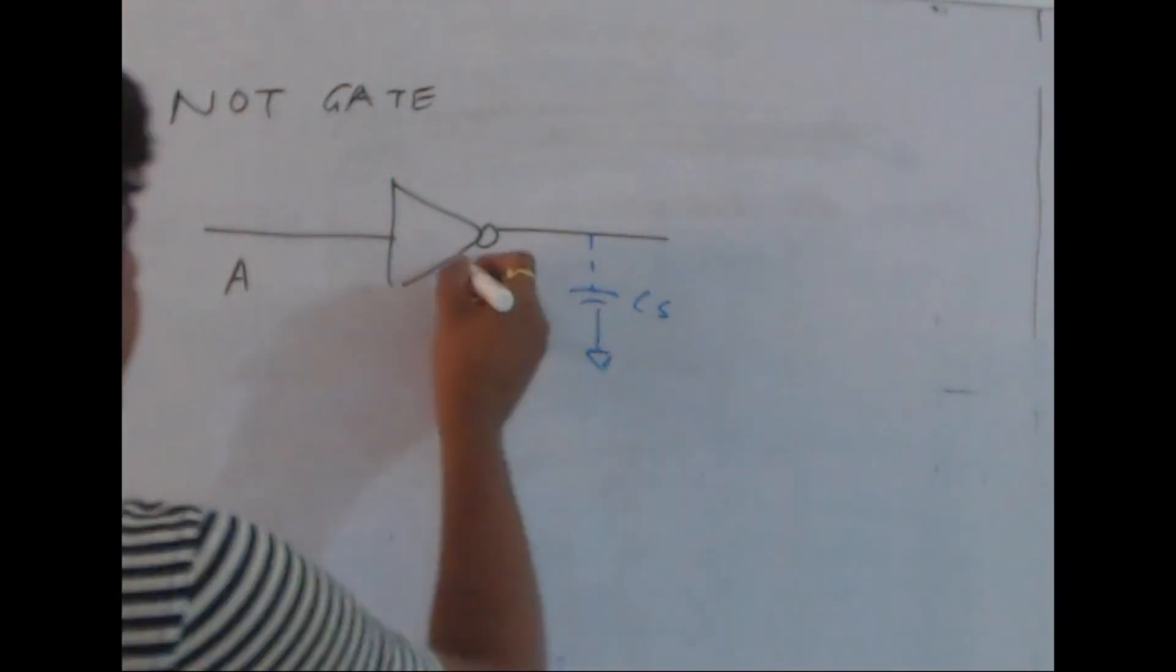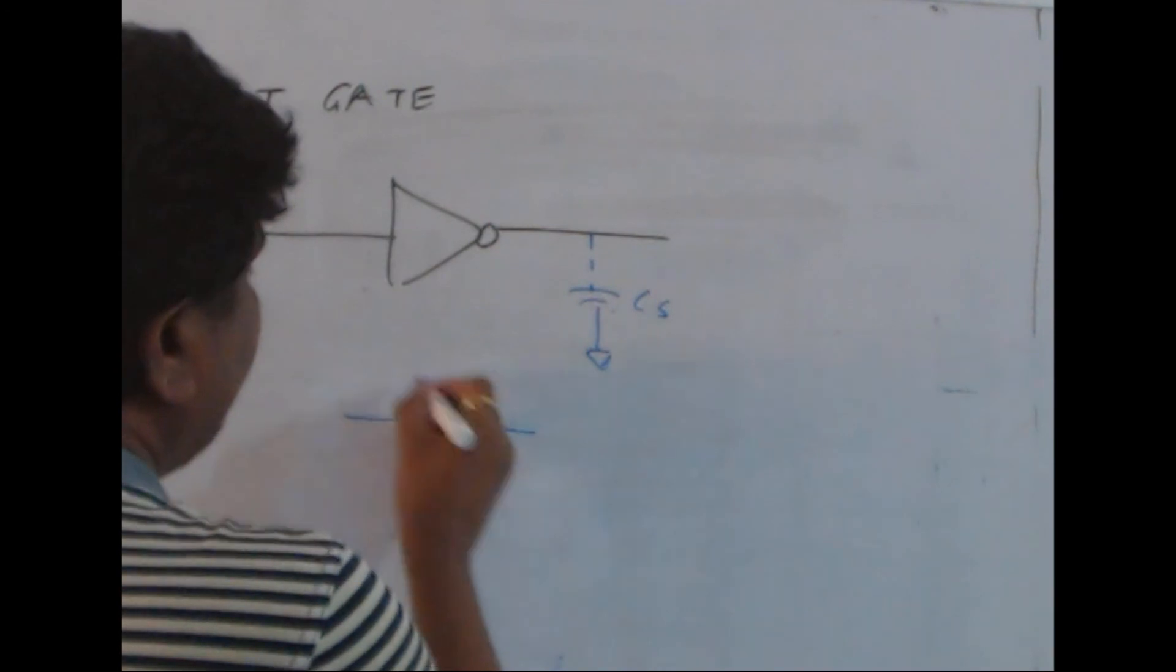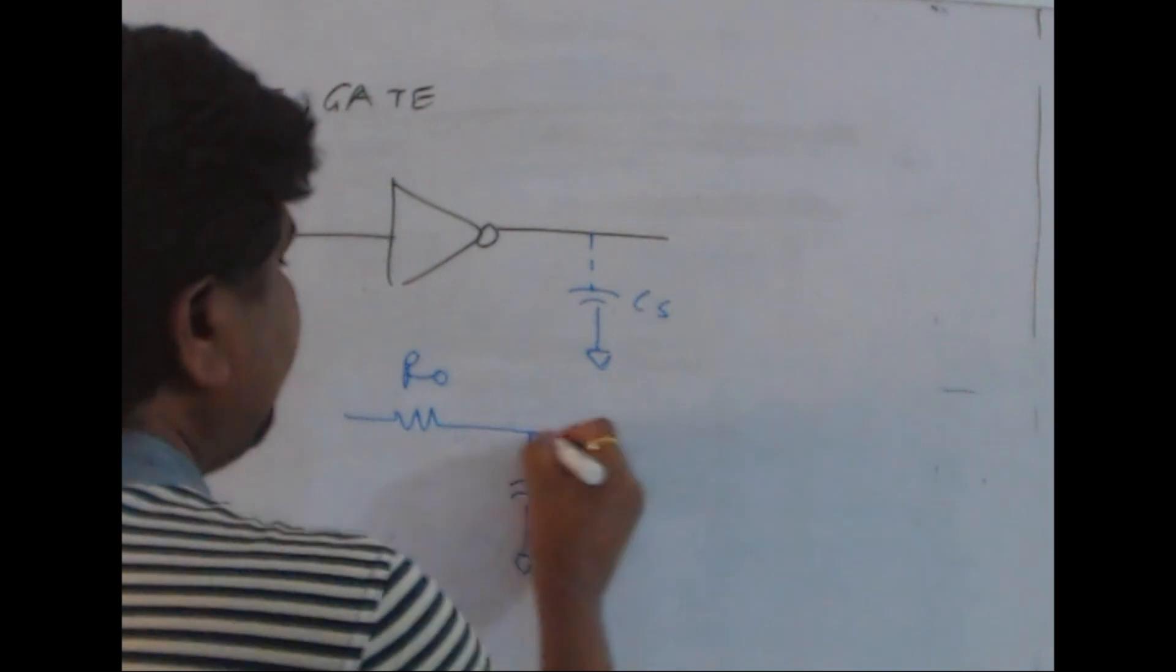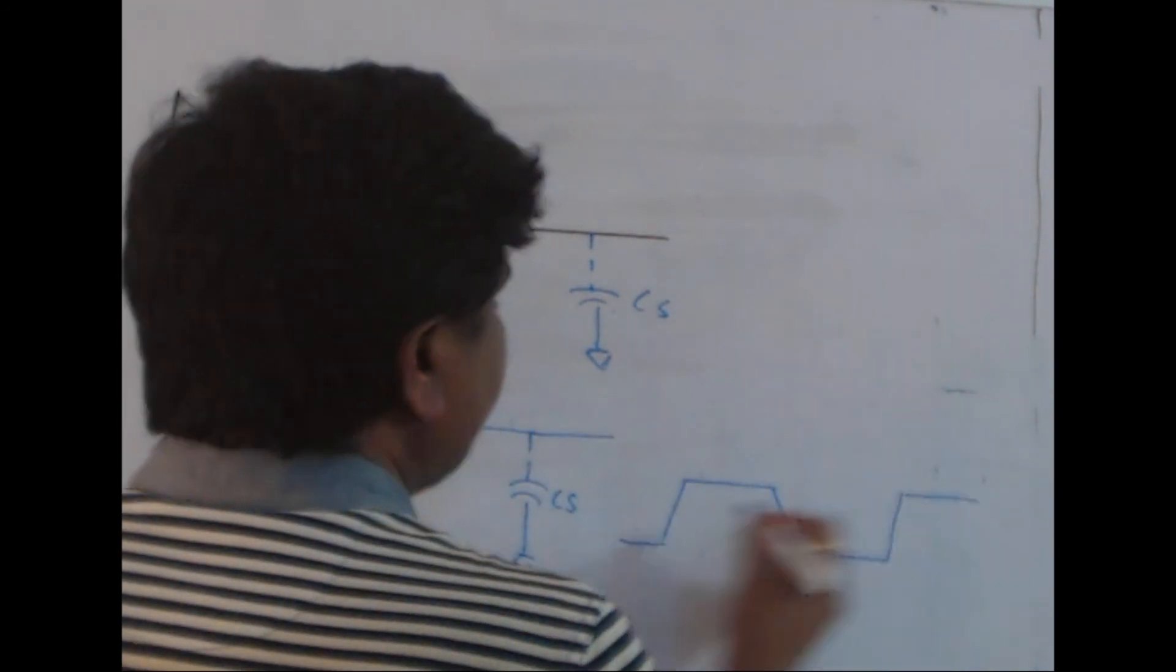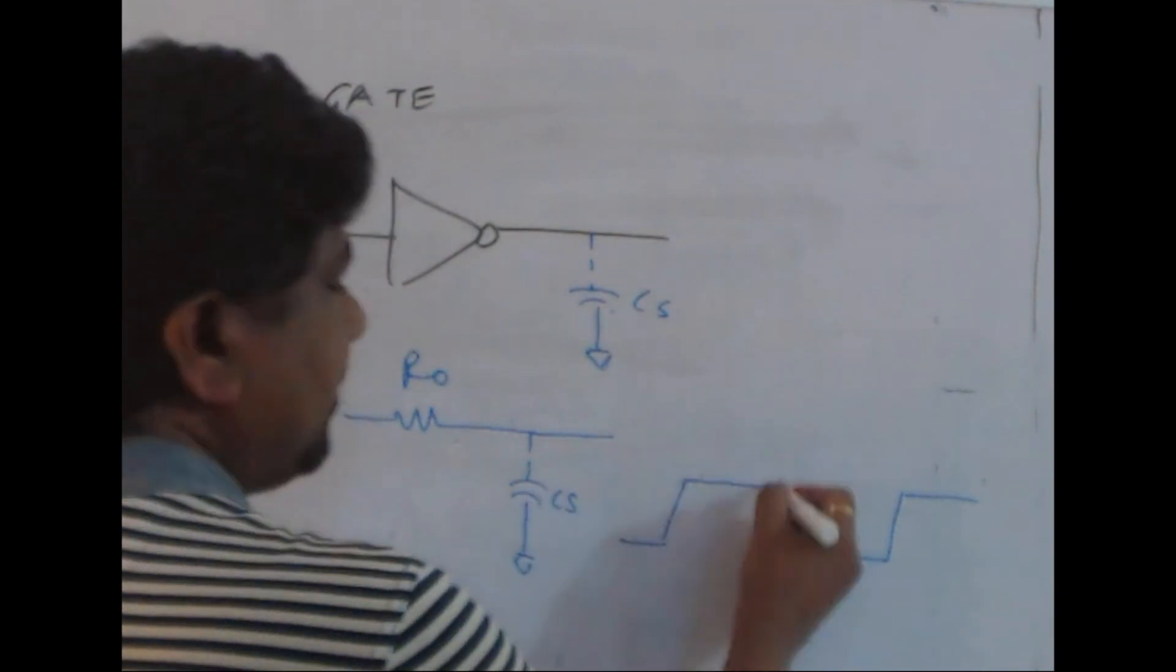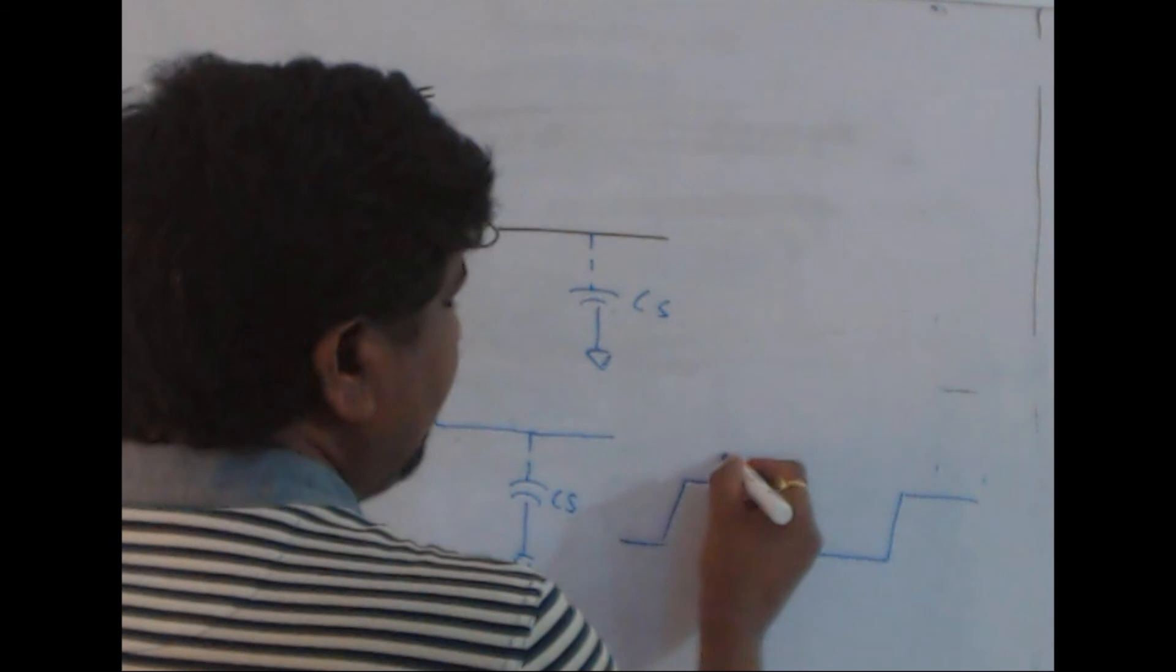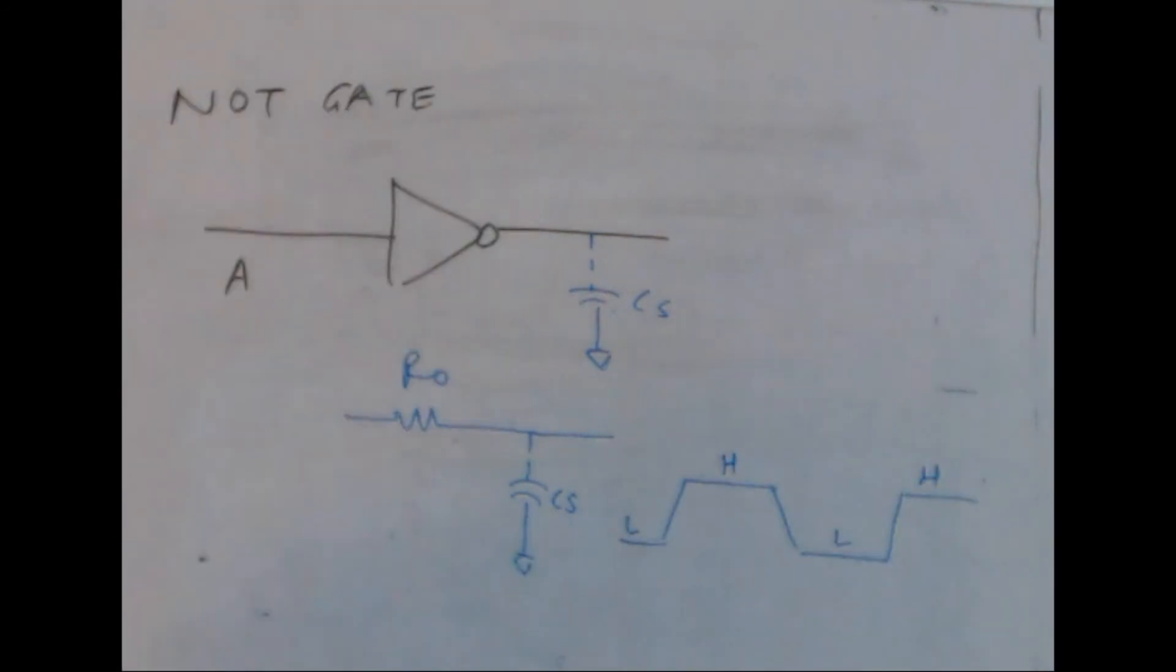Effectively, when we consider equivalent resistance as R output (R0), and this is Cs - whenever we say output is rising or falling, there is rise time involved as well as fall time. During this, we will get stable output: here high, this is low, this is low, this is high.